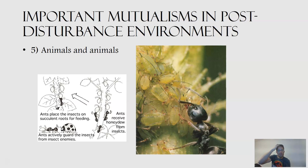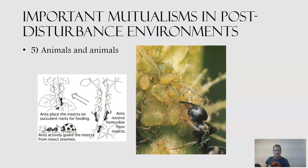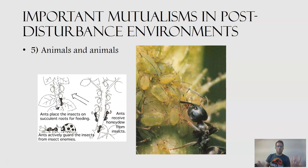We might also have animal-animal mutualism. For example, tiny aphids and a larger black ant: the ant taps on the aphid, which secretes a sugary substance the ant consumes. In turn, the ant chases away ladybugs and other predators coming to eat the aphids. So it offers protection in exchange for sugar.